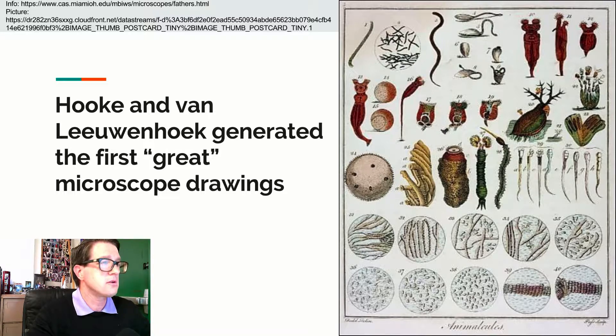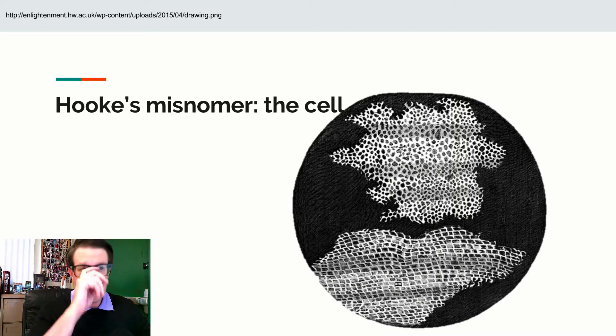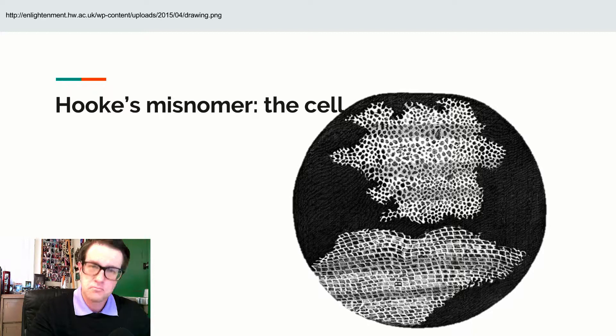In particular, Hooke looked at a piece of cork, and what he noticed inside of the cork are these little chambers or little spots. And he said, oh, well, those remind me of cells. Cells meaning a place where you'd put someone who is in an insane asylum or in a jail. And the result was we named these little things cells because of his statement.